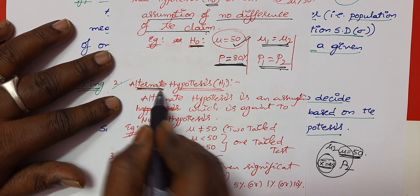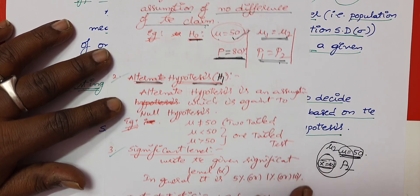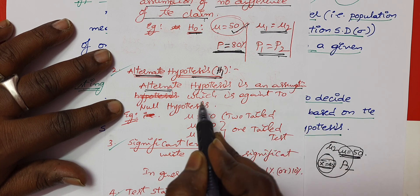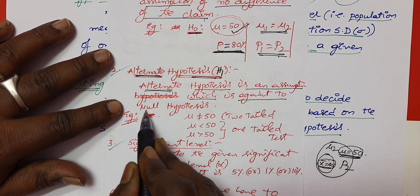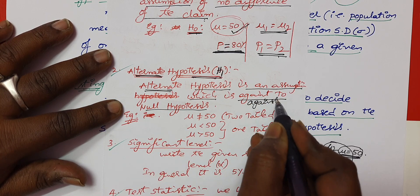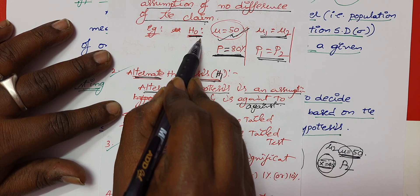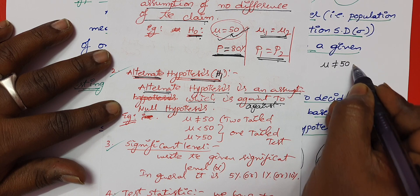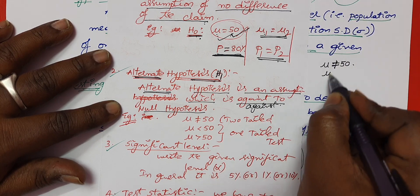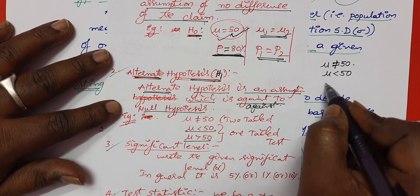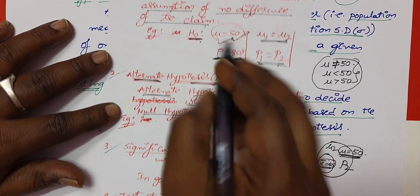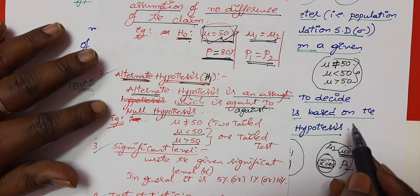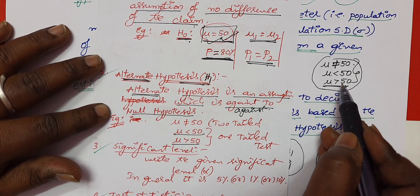Next, we can say alternate hypothesis. The alternate hypothesis is an assumption — the opposite of the null hypothesis. If the difference is clear, we can say not equal to. But it can also be not equal to, less than, or greater than depending on the problem statement.